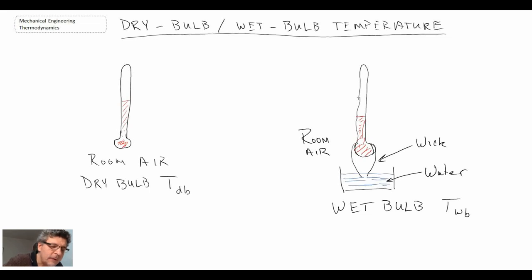So there we have what we call the wet bulb and dry bulb temperatures. The dry bulb temperature is just measuring standard room air, and the symbol we use for that is T_dB.